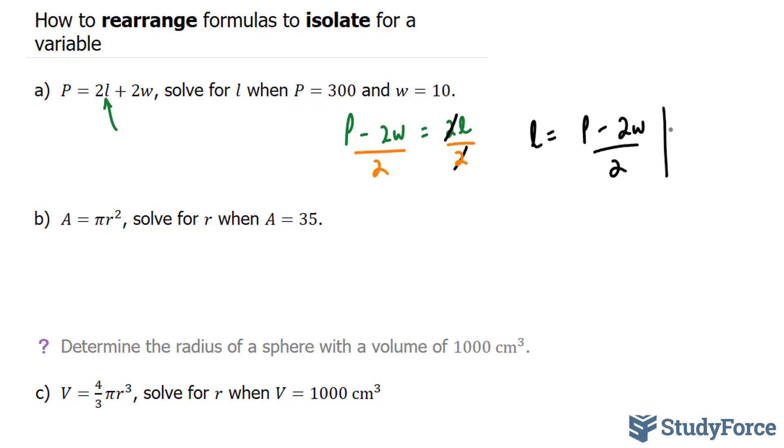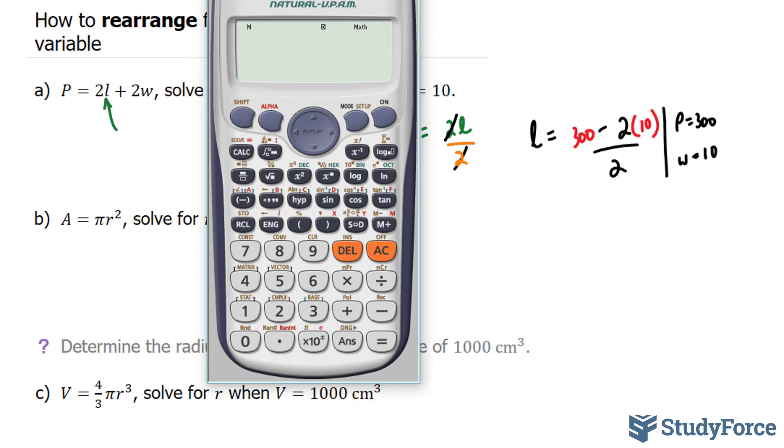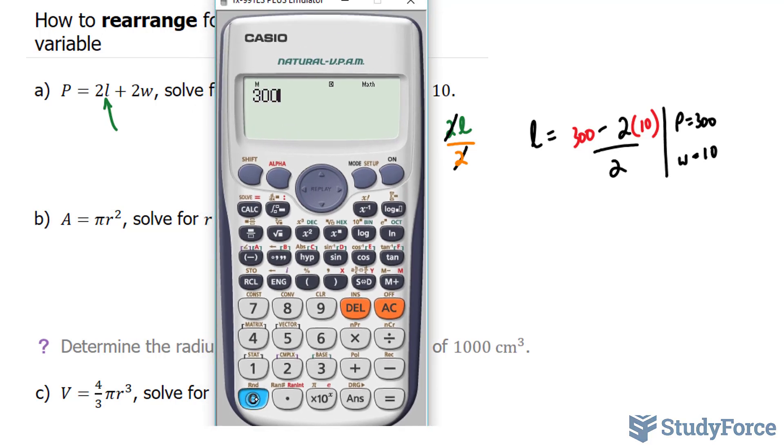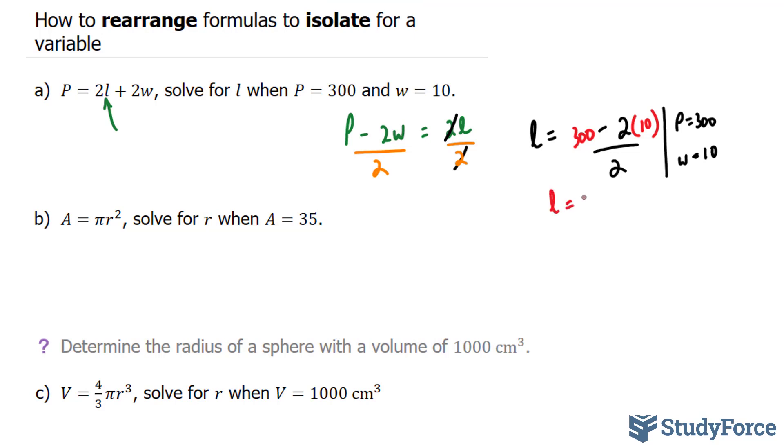So you're left with the length is equal to the perimeter minus 2 times the width over 2. And now we can substitute these numbers into our formula, where P is equal to 300 and W is equal to 10. So what I'll do next is erase this P and erase this W and replace it with 10 for the W and 300 for the P. Using our calculator, we get 300 minus 2 bracket 10, press equals, divided by 2 gives me 140.